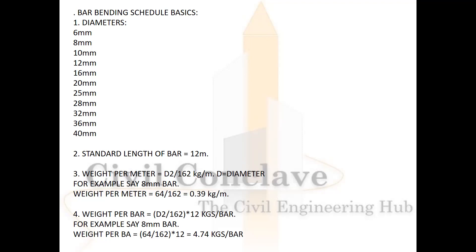That means diameter squared divided by 162. For example, for an 8mm bar, weight per meter = 8² = 64 divided by 162 = 0.39 kg per running meter.